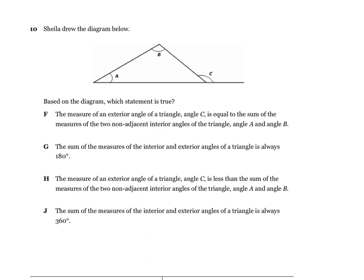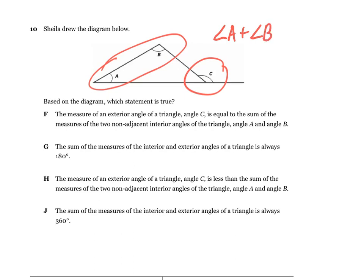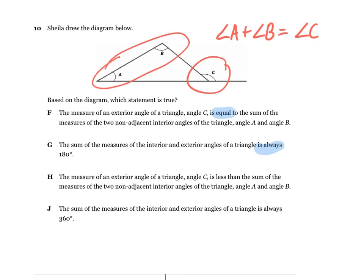On number 10, I practically handed you the answer before the test. Angles A and B together have to equal the value of the exterior angle C — that's the exterior angle theorem. Just read through the choices and see which one matches. Angle A plus angle B equals angle C. One choice says equal, another says the sum is always 180, another says less than, and another says always 360. Figure out which one states that A plus B equals C.